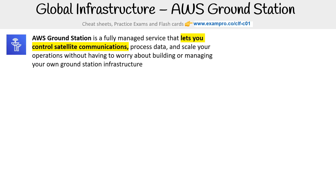Hey, this is Andrew Brown from ExamPro. We are taking a look at AWS Ground Station. This is a fully managed service that lets you control satellite communications, process data, and scale your operations without having to worry about building or managing your own ground station infrastructure.